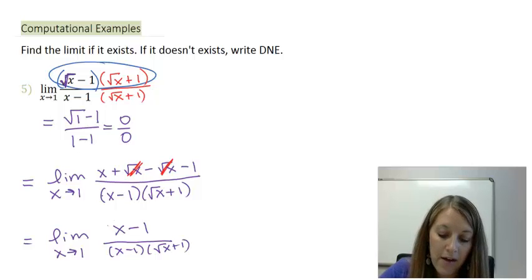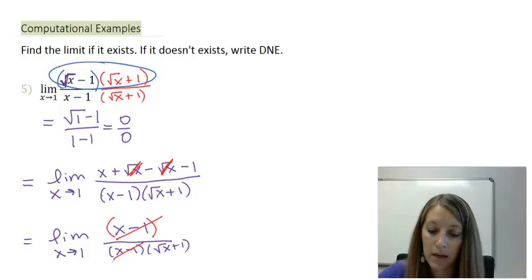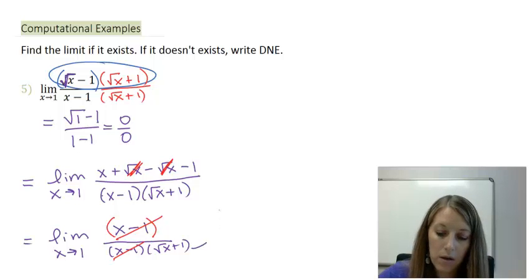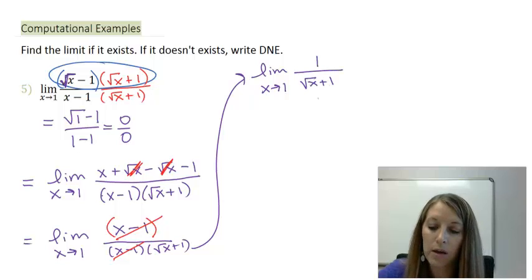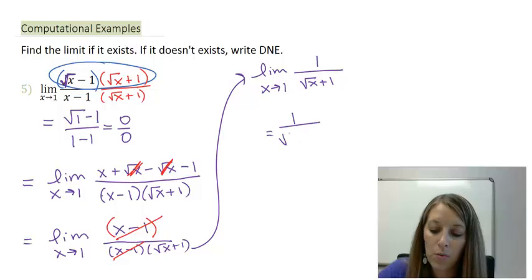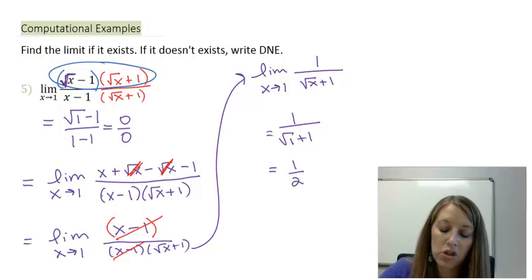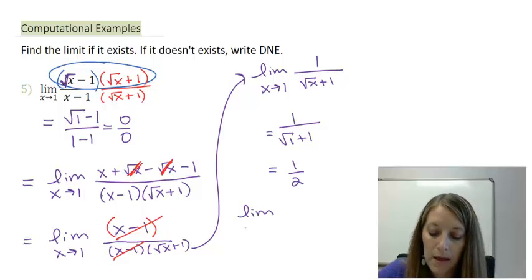Notice what happens. I have an x minus 1 over an x minus 1. So, this simplifies to give me the limit as x is approaching 1 of 1 over root x plus 1. Something cancels, so I start my steps over and I substitute in my x value. That gives me 1 over root 1 plus 1 or 1 over 2. So, my official answer here is the limit as x is approaching 1 of my function, root x minus 1 over x minus 1 is equal to 1 half.